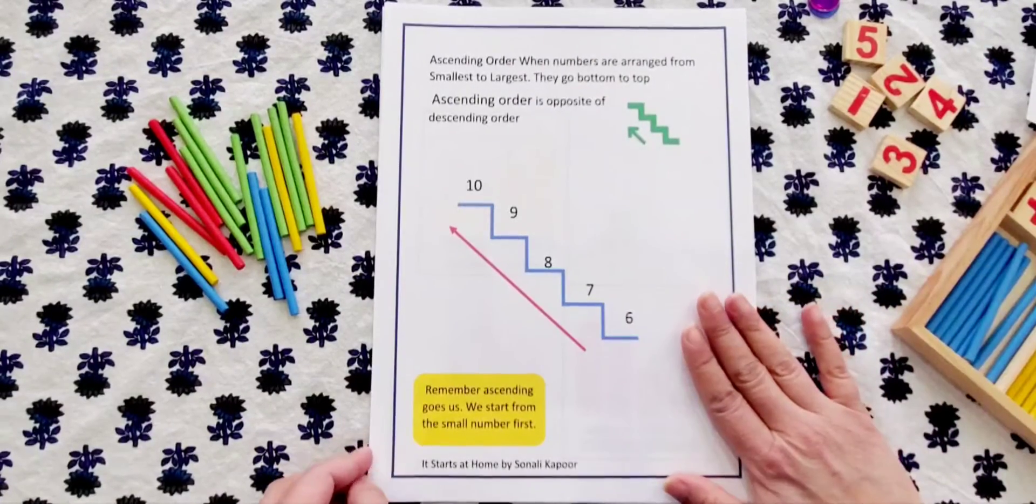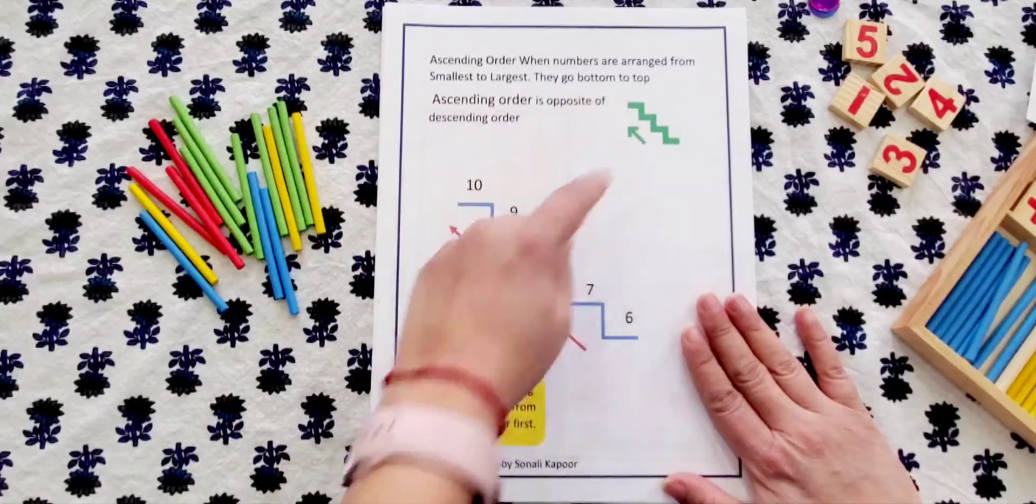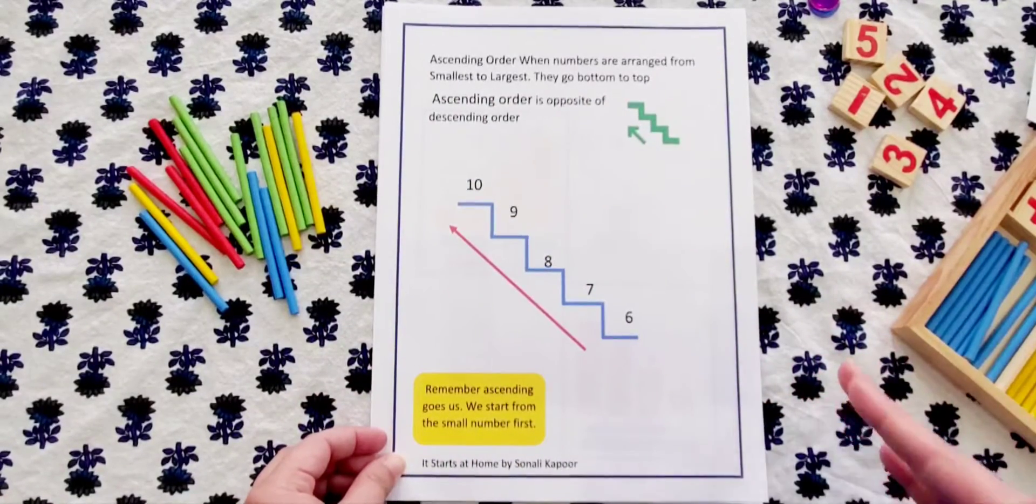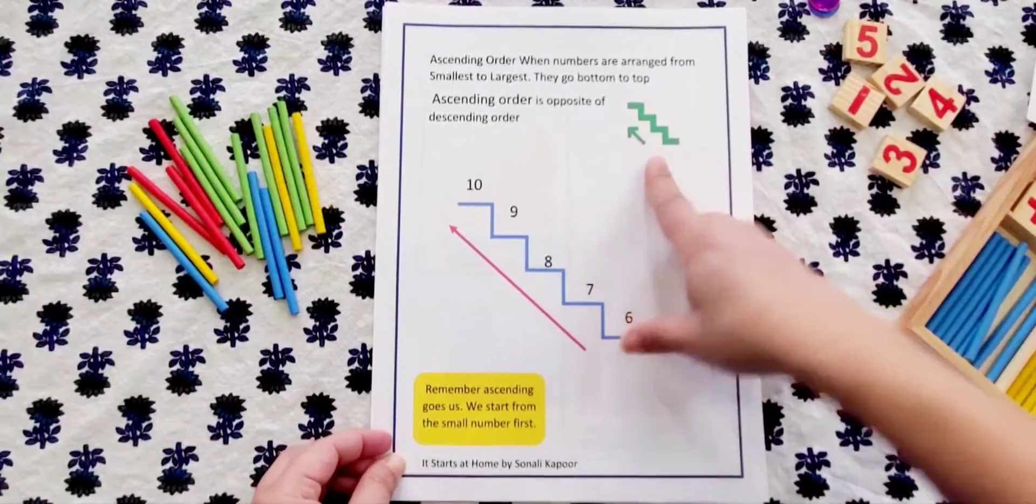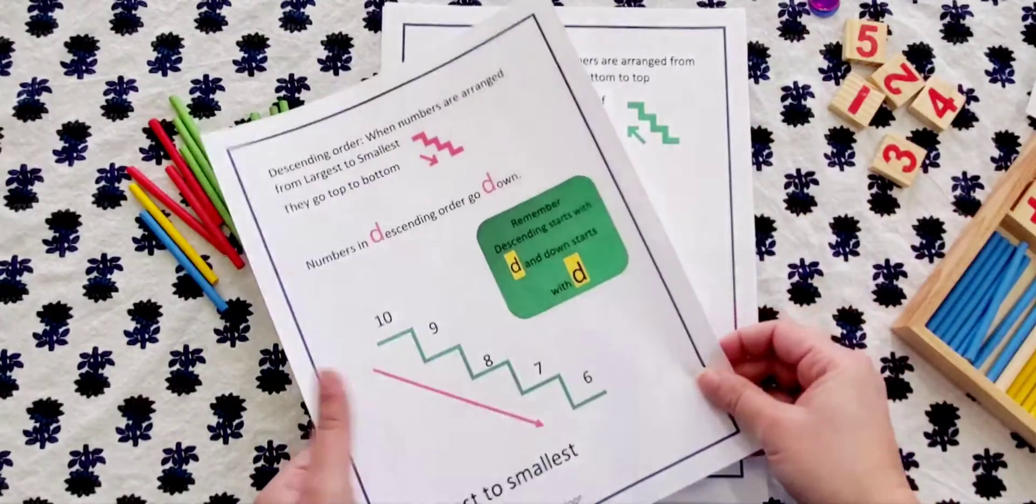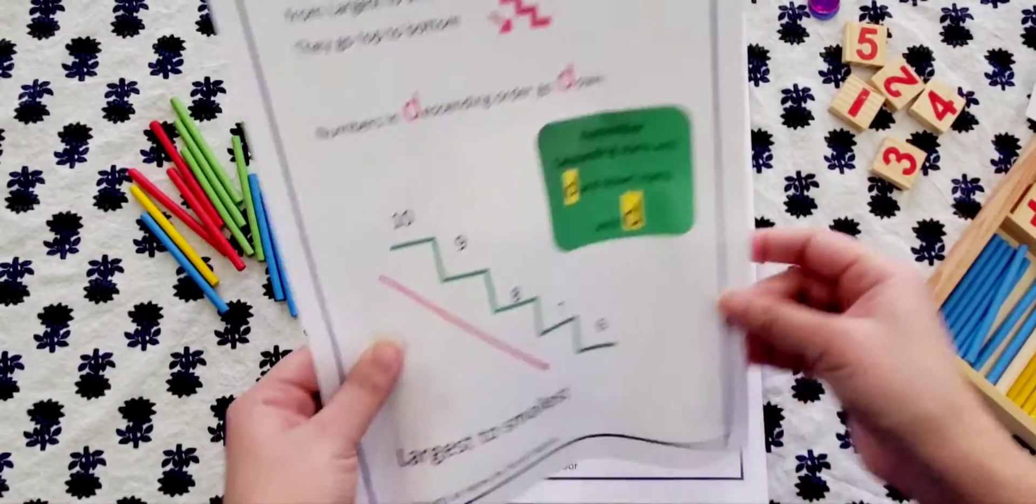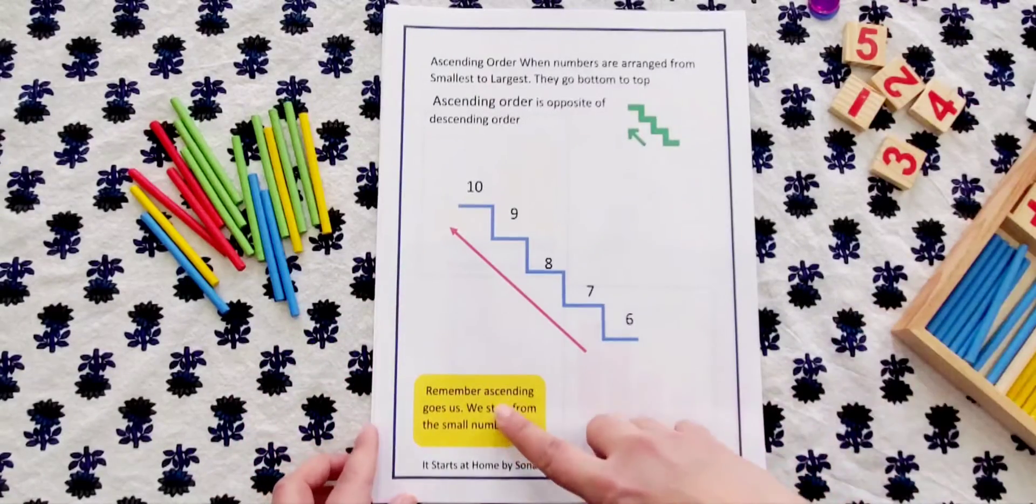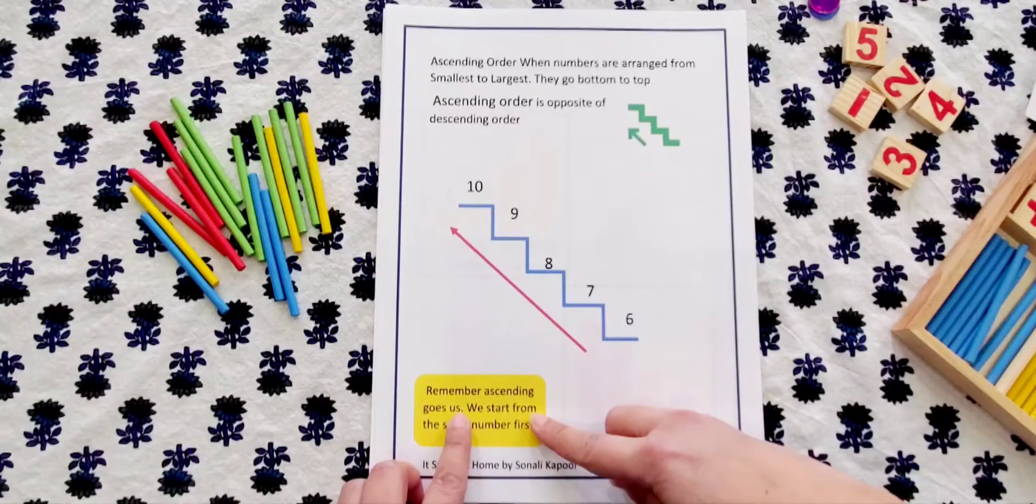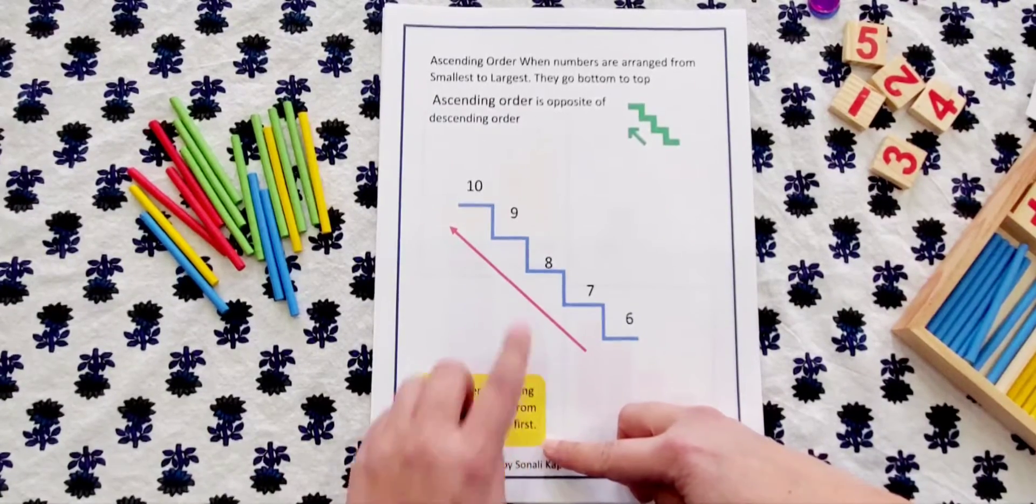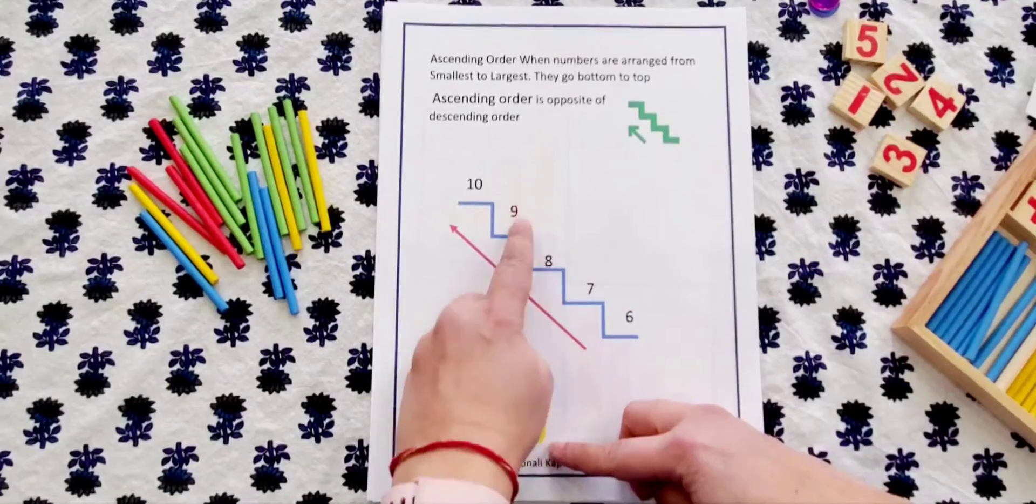Using the same concept, I have explained ascending. When numbers are arranged from smallest to largest they go bottom to top. Ascending order is opposite of descending, so you could see that there is a vast difference between both the pictures for the kids to understand. And here remember ascending goes up, we start from the small number first so it's 6, 7, 8, 9, 10.